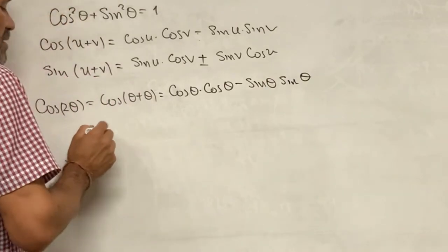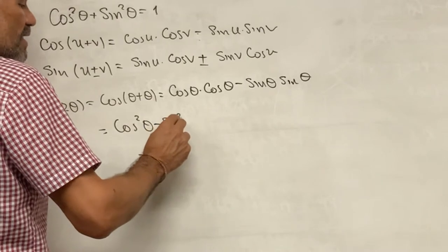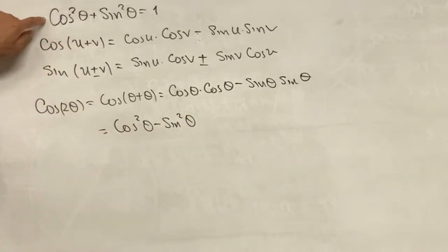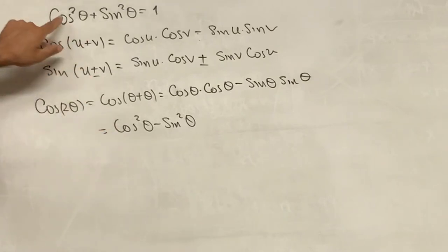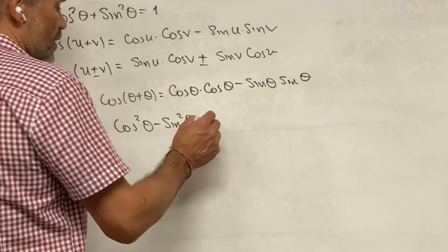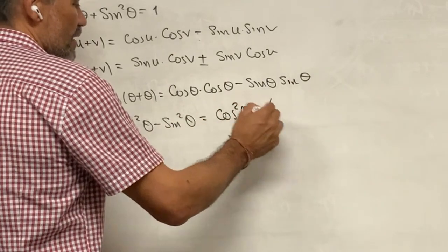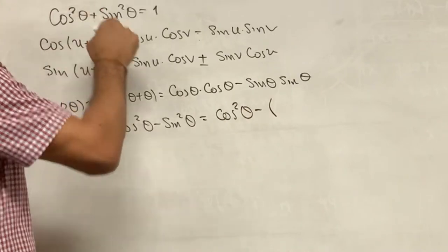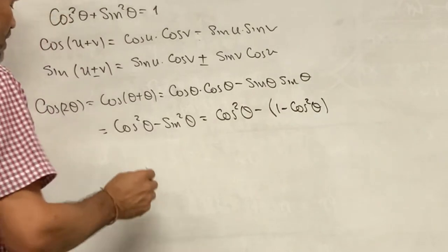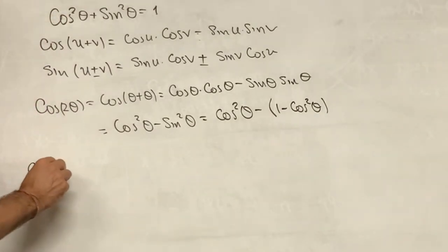Which is cosine squared of theta minus sine squared of theta. But we can use this identity to write this expression in terms of only cosine squared of theta. We can do that by replacing sine squared of theta with 1 minus cosine squared of theta. And from here, we get the following identity, which is very useful.